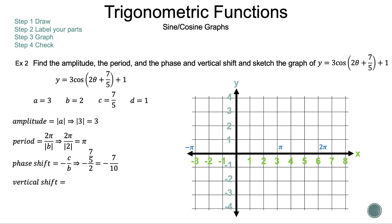Now let's find the vertical shift. Since the function has a plus 1 at the end, our graph shifts 1 up. Now we've found the amplitude, the period, the phase shift, and the vertical shift. We can use that information to rewrite our function so we can see the phase shift. If we factor out a 2 inside the parentheses, we get y = 3 cosine of 2 times the quantity (θ + 7/10) plus 1.